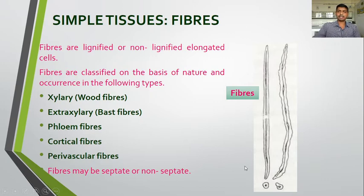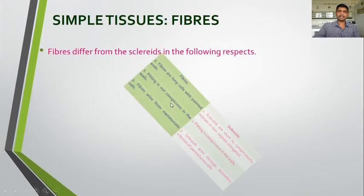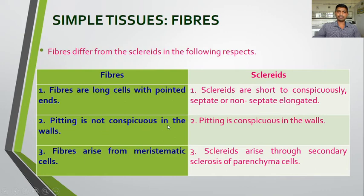Fibers differ from sclerides in the following respects: fibers are long cells with pointed ends; sclerides are short to conspicuous, septate or non-septate elongated cells. Pitting is not conspicuous in fiber walls, whereas pitting is conspicuous in scleride walls. Fibers arise from meristematic cells directly, while sclerides arise through secondary sclerosis of parenchyma cells.